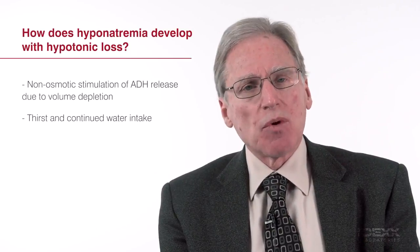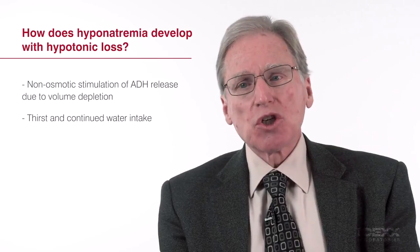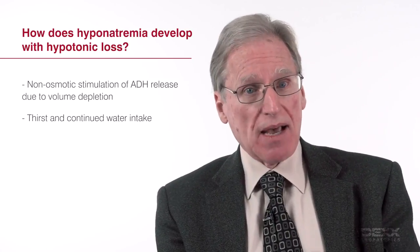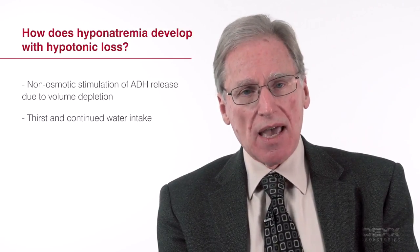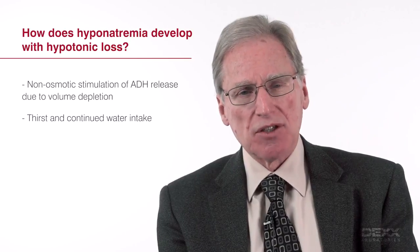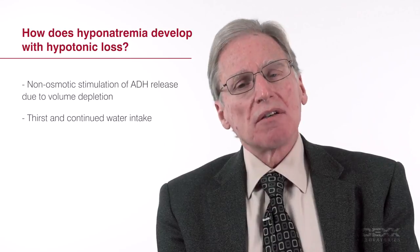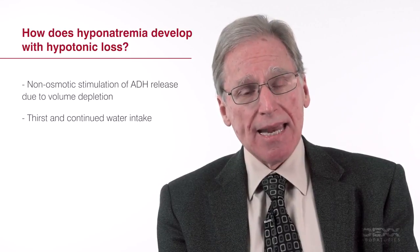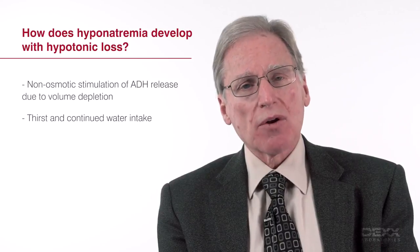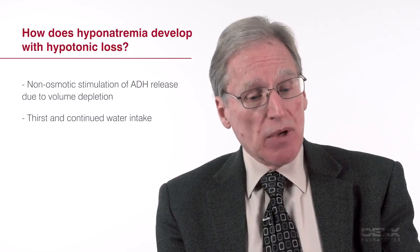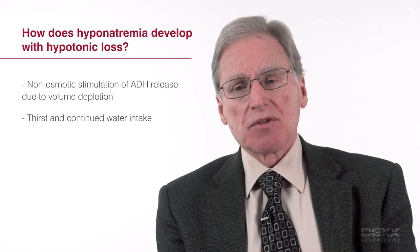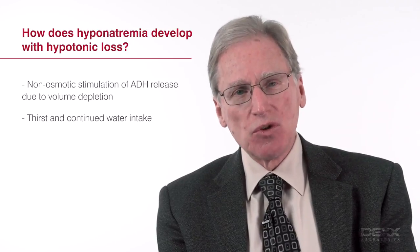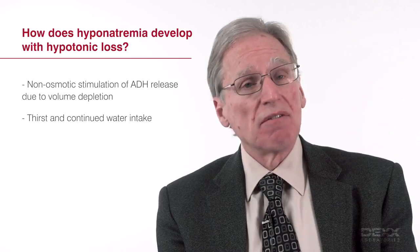You may ask yourself: how can hyponatremia develop with hypotonic losses? That does not seem logical because you would expect hypernatremia to develop. But hyponatremia can develop with hypotonic losses because of a situation called non-osmotic stimulation of antidiuretic hormone release. Severe volume depletion can lead to ADH release from the brain, which can impair water excretion by the kidney. The animal then continues to drink water, but the kidneys can't excrete the water very well, so hyponatremia develops. Although it might seem counterintuitive, it's not unusual for hyponatremia to develop in the face of volume depletion.